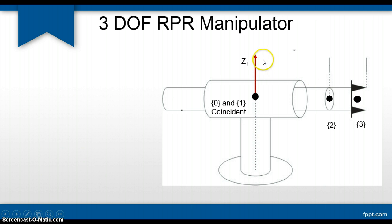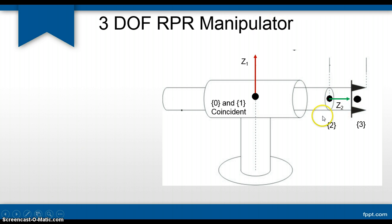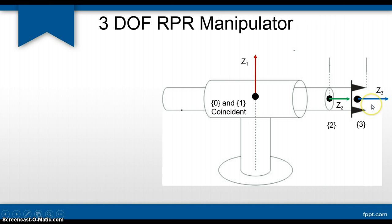Axis Z1 is the rotation axis for joint 1 about the vertical axis. The second joint is of sliding type, so axis Z2 will be in the direction of motion — the direction of sliding — and we assign Z2 towards the right side (positive direction) at the origin of joint 2. Joint 3 is rotating, so Z3 is the axis of rotation for joint 3.